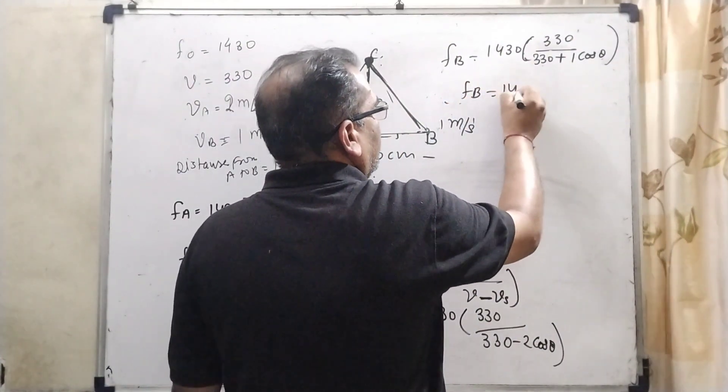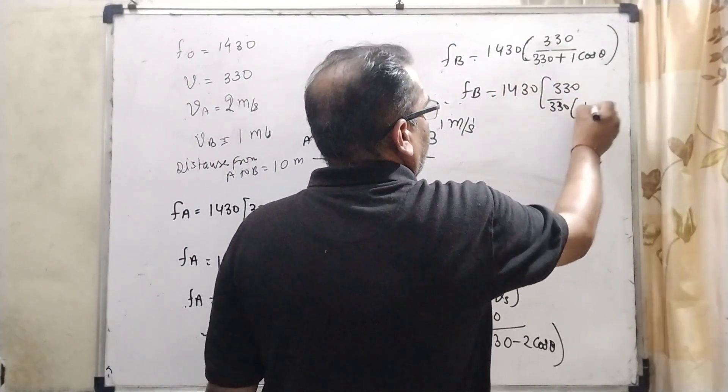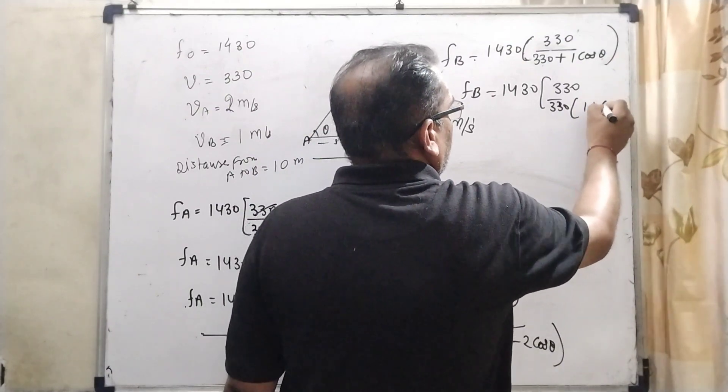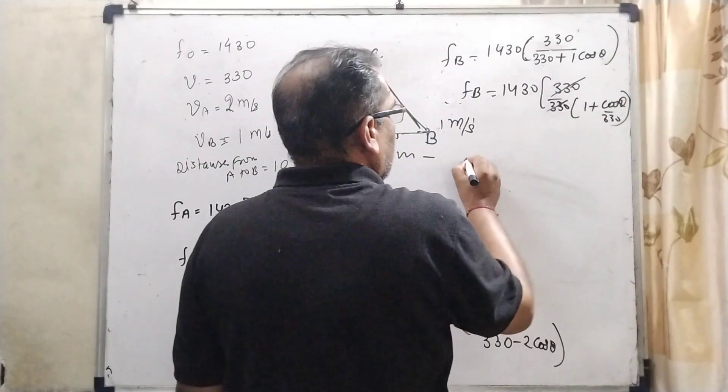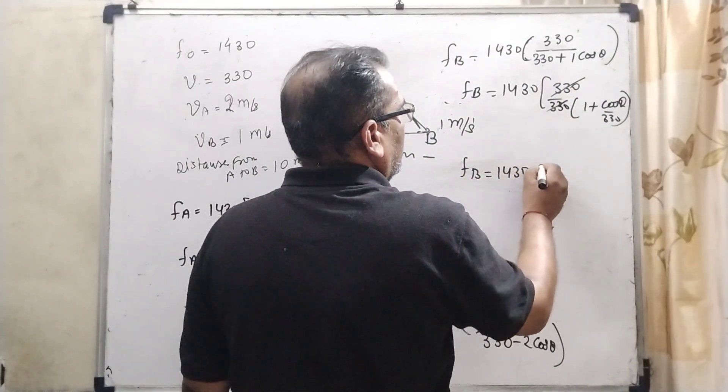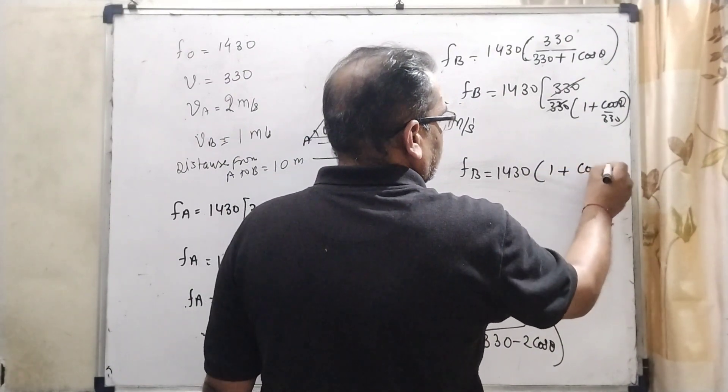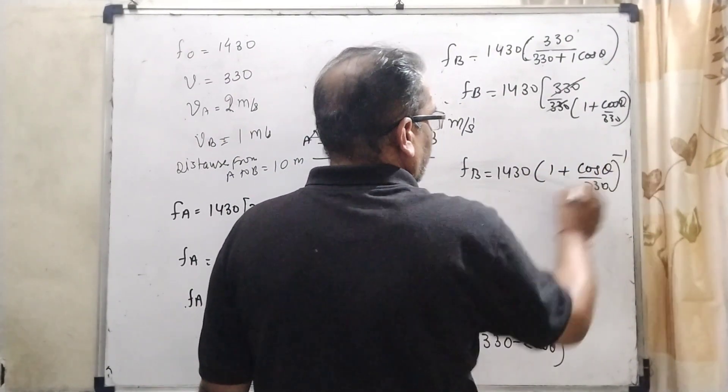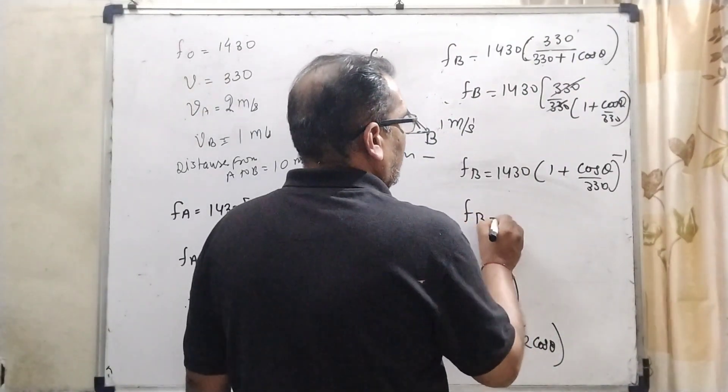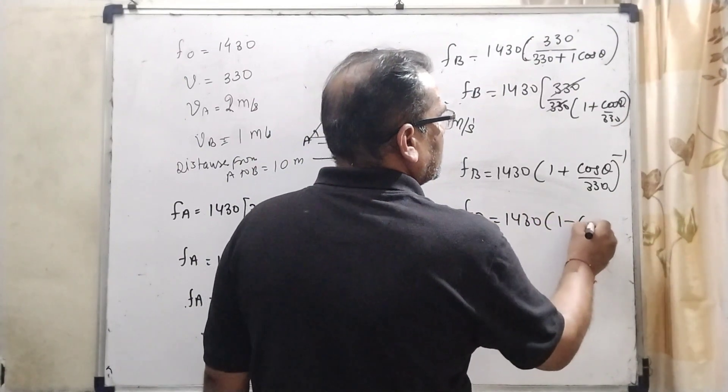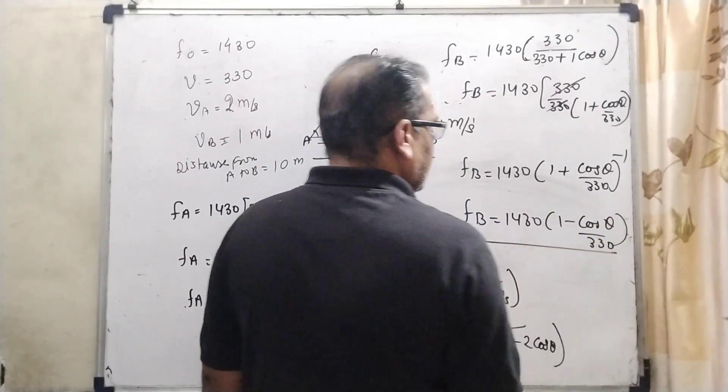Again, same procedure. 330 gets common from numerator and denominator. Now it becomes cos θ / 330. This will be cancelled out. Then f_B = 1430 × [1 + (cos θ / 330)]⁻¹. Again, by using binomial theorem, f_B = 1430 × [1 - (cos θ / 330)].